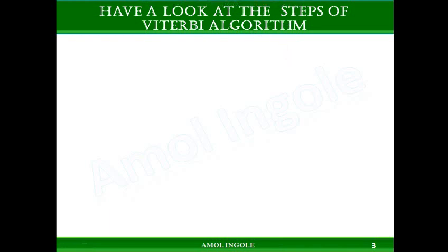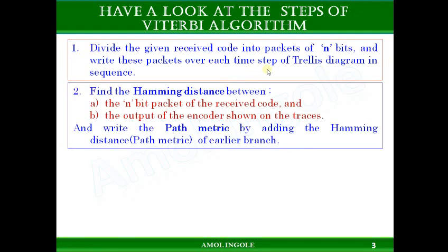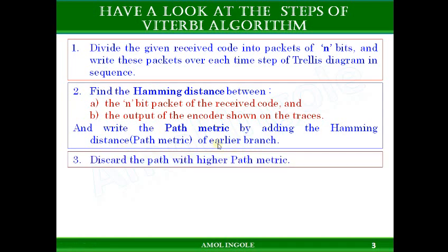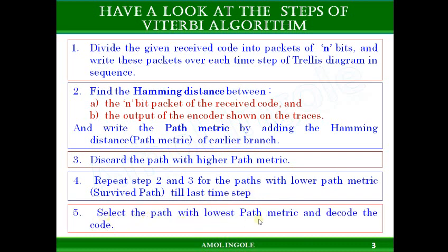The Viterbi algorithm steps we discussed in the earlier video are: Step 1 — divide the given received sequence into packets of n bits and write those packets over the trellis diagram. Step 2 — find the hamming distance between the n-bit packet and the encoder output, then find the path metric by adding the hamming distance to the earlier branch. Step 3 — discard the path with higher path metric. Step 4 — repeat steps 2 and 3 for the path with lower path metric till the last time step. Step 5 — select the path with the lowest path metric and decode the code.